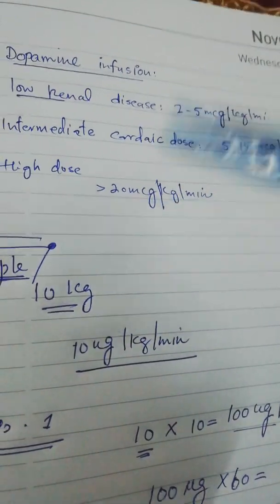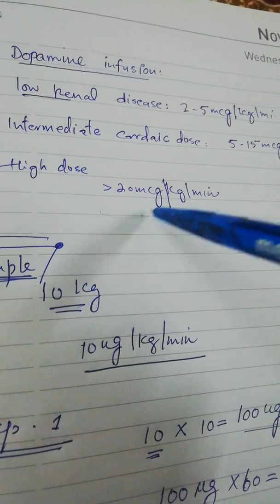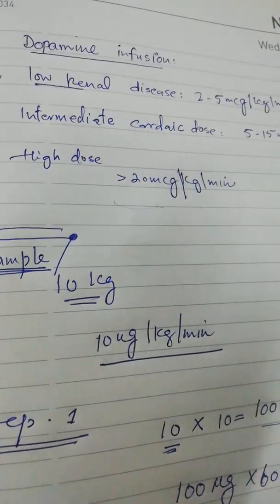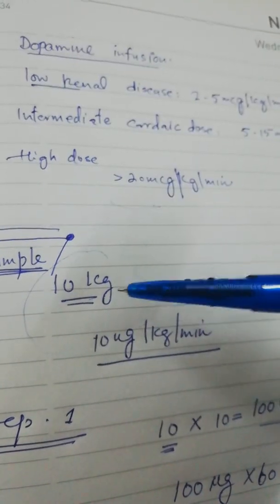And we have a high dose which we usually give in certain shock conditions, greater than 20 microgram per kg per minute. Let's have an example.